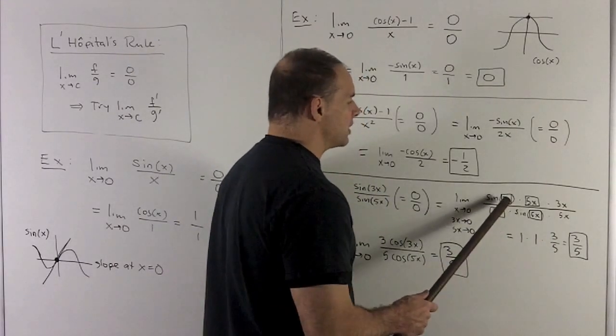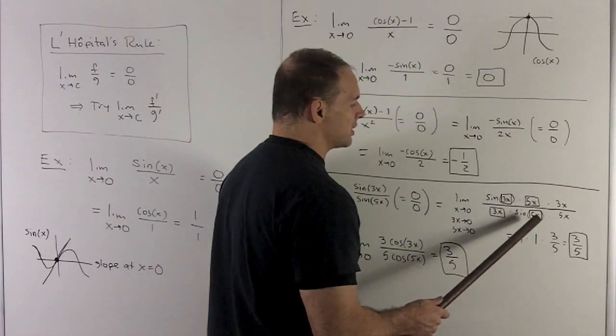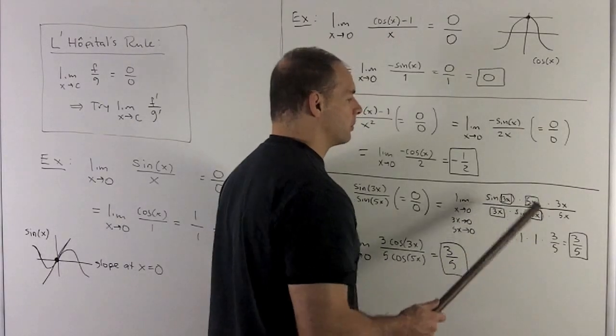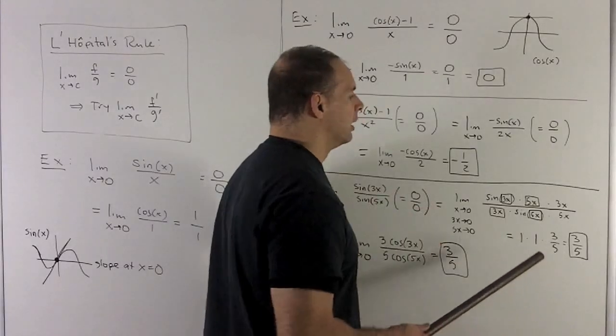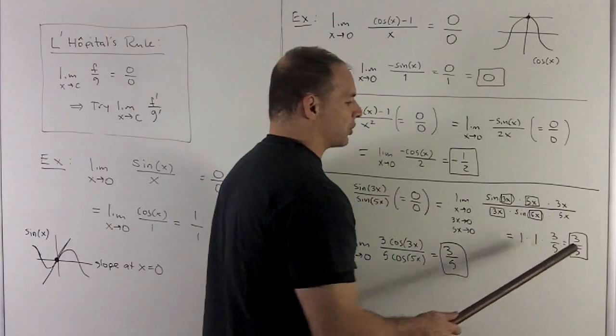So you'll notice when we take the limit, the first term is going to go to 1 since it's sine of box over box. The second term is going to go to 1 because it's sine of box under box. We just flip 1 over and we get 1. And then here the x's can cancel to give me a 3 fifths. And I get my answer at 3 fifths.